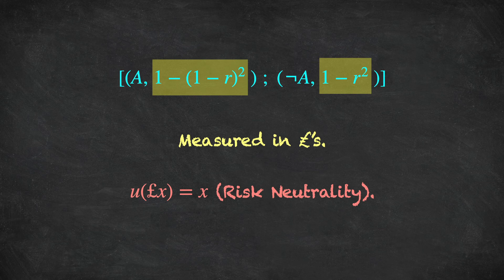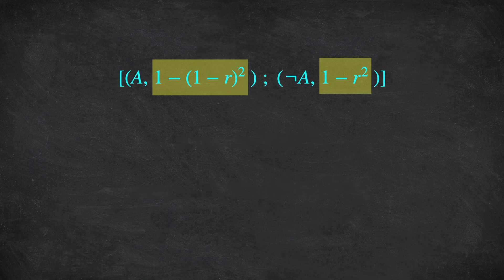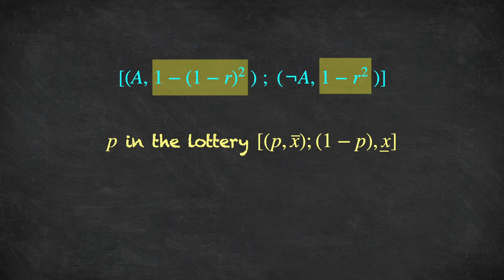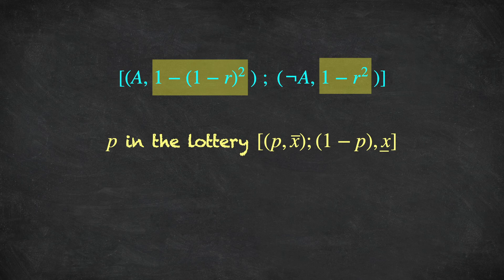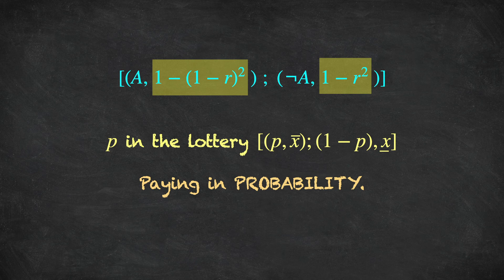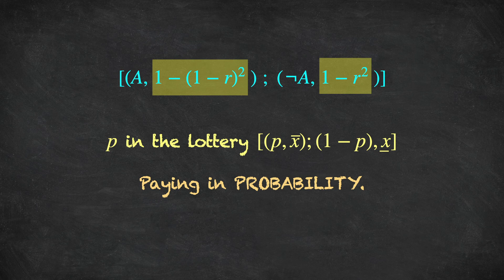And so when we assumed that the utility of x pounds is equal to x, we were making the assumption that our decision maker is risk neutral. But really, we don't need risk neutrality so much. We just need utility to be linear in whatever currency we're paying our experimental subjects in. So consider the following. Instead of paying in pounds, I could say that this number 1 minus (1 minus R) squared is the probability P in a lottery where you get some good outcome over line x with probability P. Otherwise, you receive the bad outcome under line x. That is, the payments we're making to our subject based on his decision choosing a number R are probability numbers. So we are paying our subject in probability.